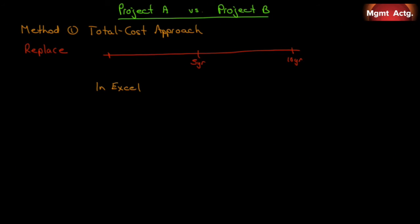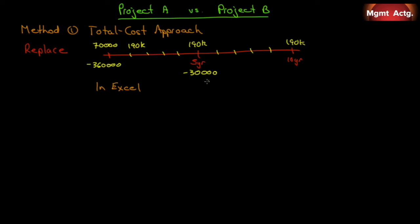Now let's look at replacing the boat. The boat costs $360,000 but we can get $70,000 for the old boat today, so we're only spending $290,000 net today. Our cash flows change — we get $190,000 in each of the 10 years that follow. In year five we only have to spend $30,000 to fix it instead of $80,000. We can still get $60,000 salvage value at the end.